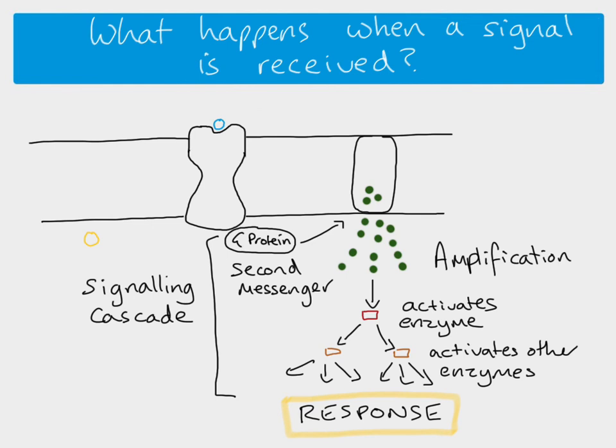The response could be the secretion of some sort of substance. It could be a response which leads to the transcription of a particular gene which then would produce a certain protein in the cell. Some kind of movement might take place or a metabolic change. All of these responses take place as a result of the initial signaling molecule which bound to the protein receptor on the cell surface membrane.